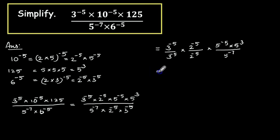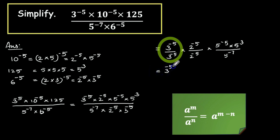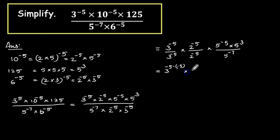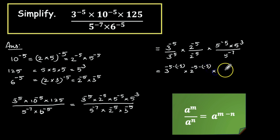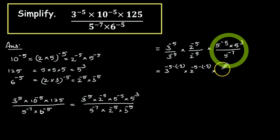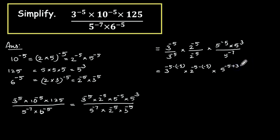We can take 3 raise to minus 5 from numerator and denominator together. The same way, 2 raise to minus 5 from numerator and denominator. Then we have 5 raise to minus 5 into 5 raise to 3 divided by 5 raise to minus 7. So we can apply the law of indices: 3 raise to minus 5 minus of minus 5, into 2 raise to minus 5 minus of minus 5, into 5 raise to minus 5 plus 3 minus of minus 7.